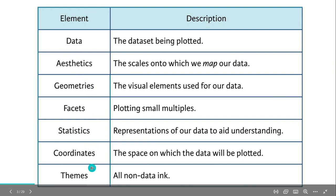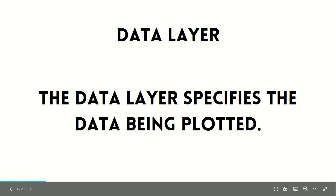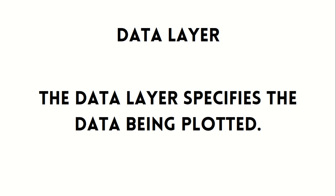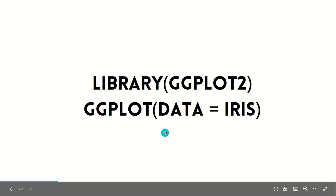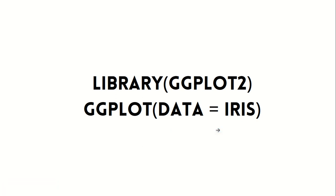The very first layer is the data layer, which specifies the data being plotted. Today's video will use iris as the dataset. The iris dataset is already built into R — we don't need to download it from anywhere. We need to load the ggplot2 library first. If you don't have it, install the package first, then load it. Using the ggplot function, we specify data equal to iris. At this point, we only have a single layer — the data layer — so there will be no scales and no graph.